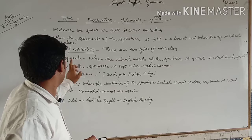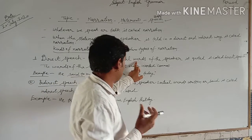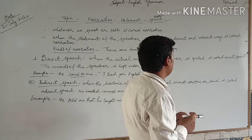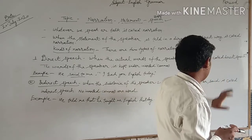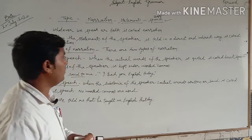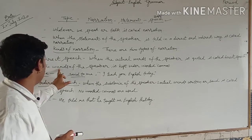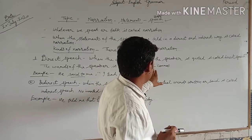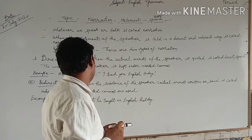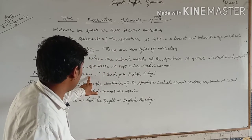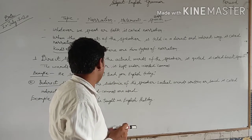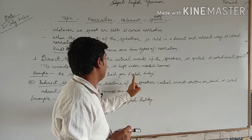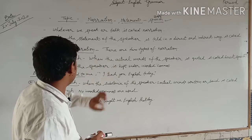Direct speech is when the actual words of the speaker are quoted, and it is called direct speech. The actual words of the speaker are enclosed under inverted commas. For example: 'I teach English language.' This is recorded within inverted commas, and so this is called direct speech.